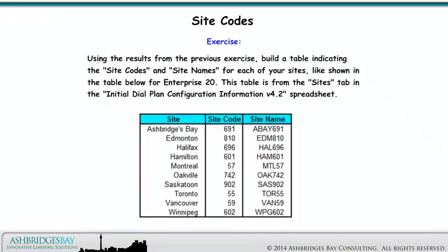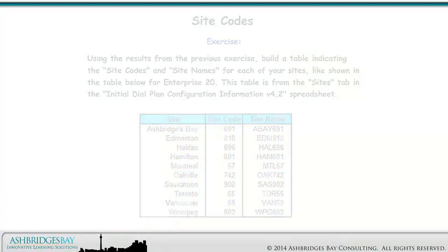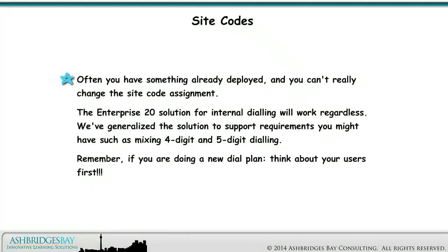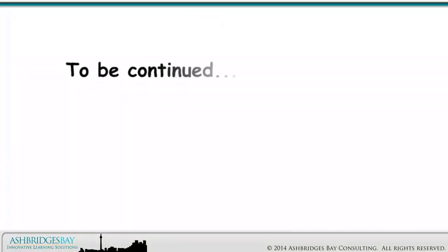Using the results from the previous exercise, build a table indicating the site codes and site names for each of your sites, like shown in the table below for Enterprise 20. This table is from the Sites tab in the Initial Dial Plan Configuration Information Version 4.2 Spreadsheet. Often you have something already deployed and you can't really change the site code assignment — the Enterprise 20 solution for internal dialing will work regardless. We've generalized the solution to support requirements you might have, such as mixing 4-digit and 5-digit dialing. Remember, if you are doing a new dial plan, think about your users first. This drawing is continued in Enterprise 20 Dial Plan Build, Site Codes and Patterns, Part 2.